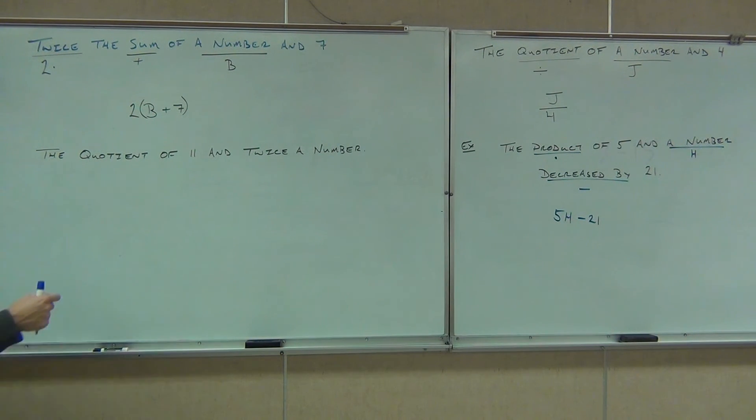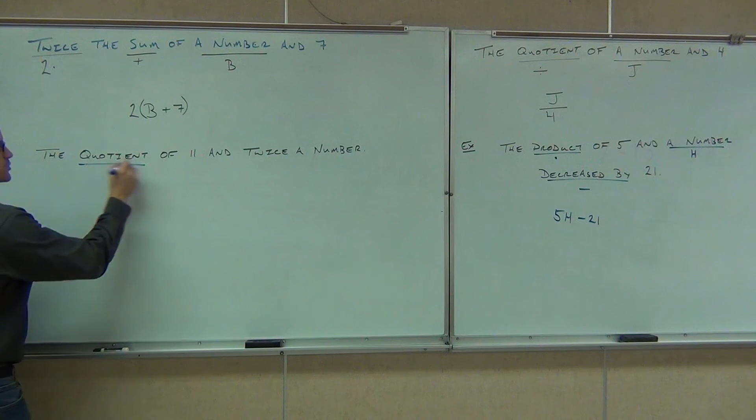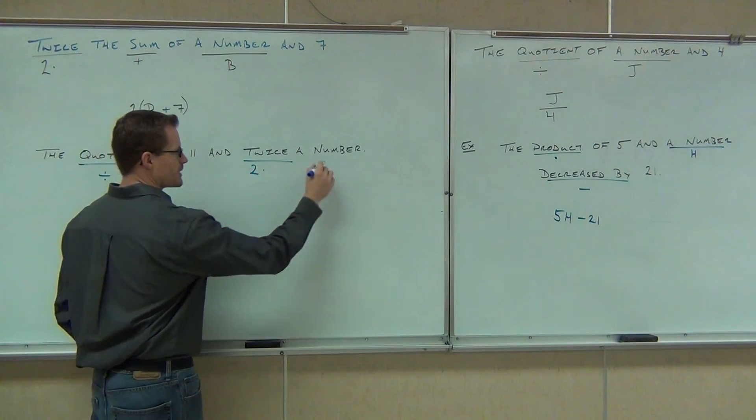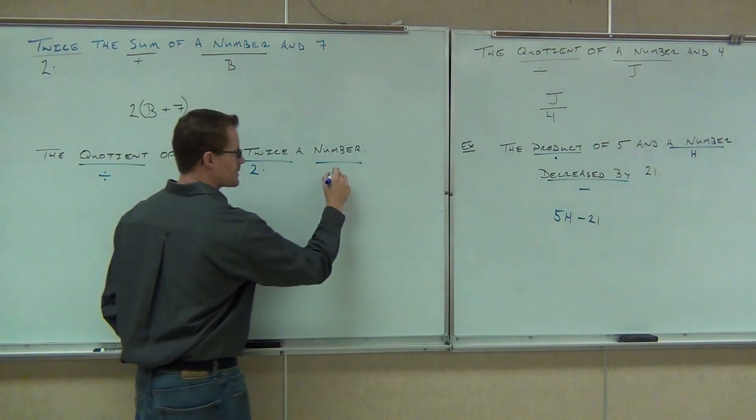Okay, so let's go ahead and do this problem together. We have the quotient of 11 and twice a number. So, when we have the quotient, of course we mean divide. Quotient of 11, that's not really much. But twice, we know that twice means two times, and a number means some variable that you pick. I'll pick Z.